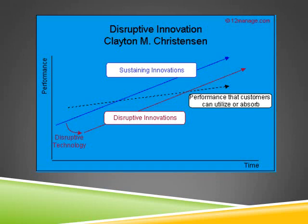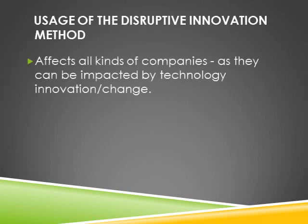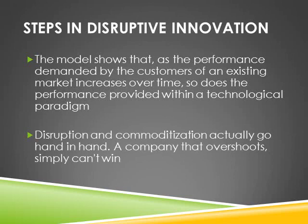Here is a line graph showing performance versus time for sustaining innovations, disruptive innovations, and the performance that customers can utilize or absorb. The model shows that as the performance demanded by customers of an existing market increases over time, so does the performance provided within a technological paradigm. Disruption and commoditization actually go hand in hand — a company that overshoots simply can't win.